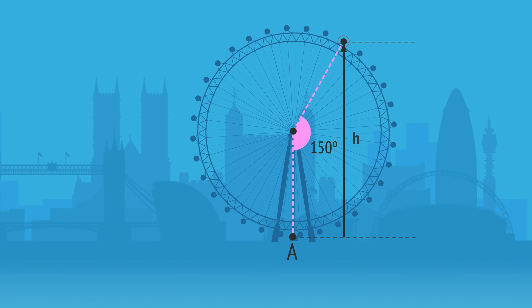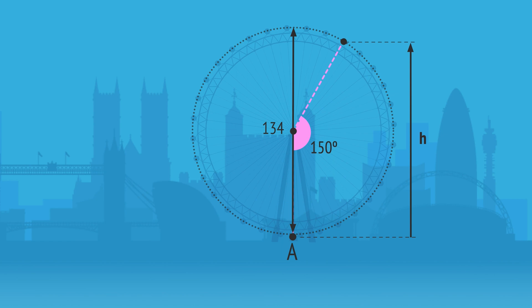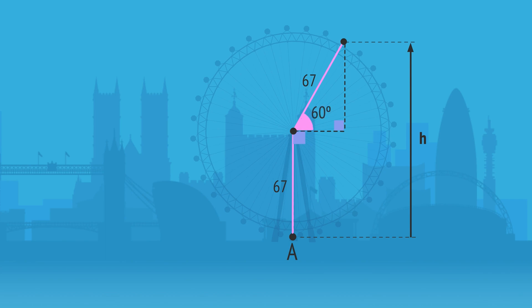How can we calculate the height of the passenger at this point? Given the diameter of 134 metres, we know the radius is 67 metres. We can draw this horizontal line and this vertical line to form a right-angled triangle, which splits the 150 degrees into 90 degrees and this 60 degree angle. And if we calculate this side X using a trig ratio, we only need to add 67 metres to find the height.